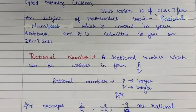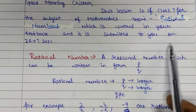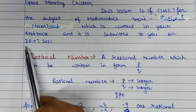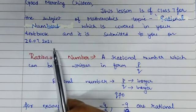Good morning children. This lesson is for class 7, subject mathematics, topic Rational Numbers, which is covered in your textbook and is submitted to you on 26th of July 2021.